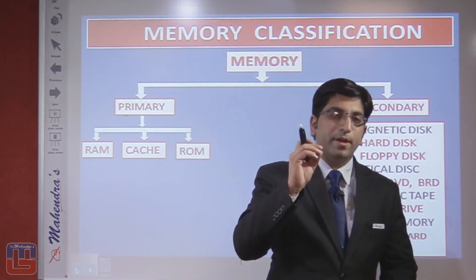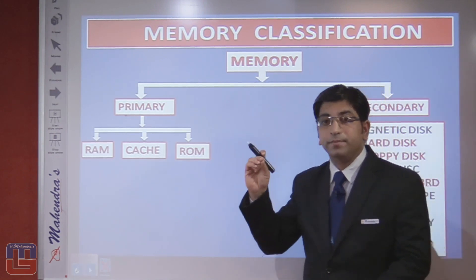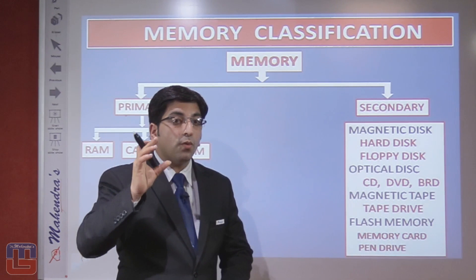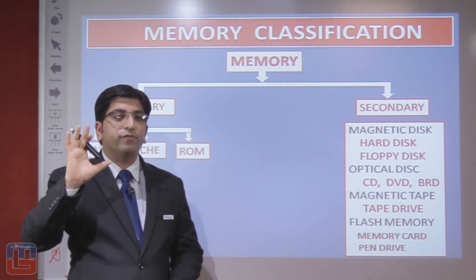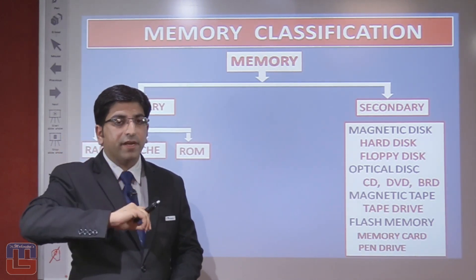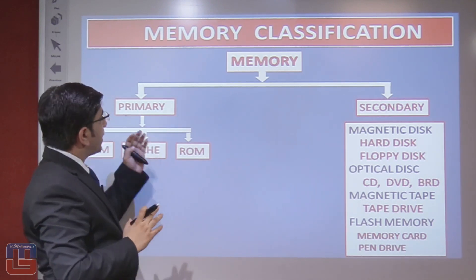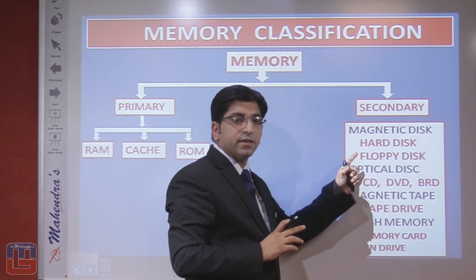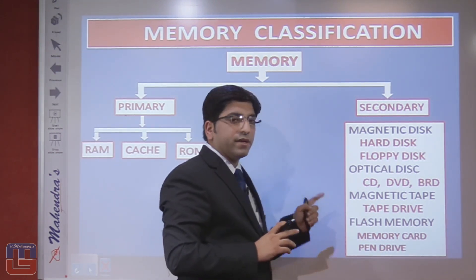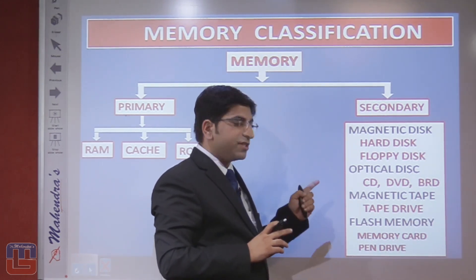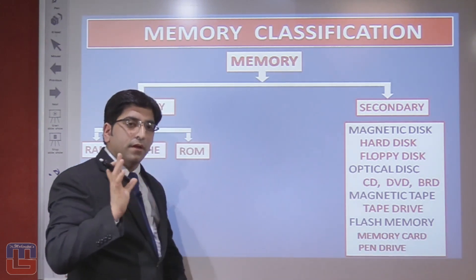Before the next question, let's look at the types of memory. A computer has memory where it keeps data and information, either temporarily or permanently. There are two types: primary and secondary. Primary contains RAM, cache, and ROM. Secondary contains magnetic disc (hard disk, floppy disk), optical disc (CD, DVD, BRD), magnetic tape (tape drive), and flash memory (memory card and pen drive).